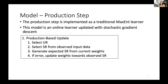The production step is a vanilla traditional MaxEnt learner — an online learner updated with stochastic gradient descent. In our update, we select a UR from the lexicon, select an SR from the observed input data, generate an expected SR from the current weights of the grammar, and see if those two SRs match. If they don't match, we update the weights towards favoring the observed SR over the expected SR.